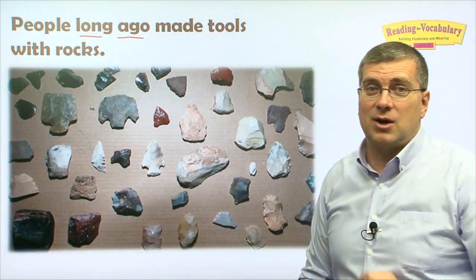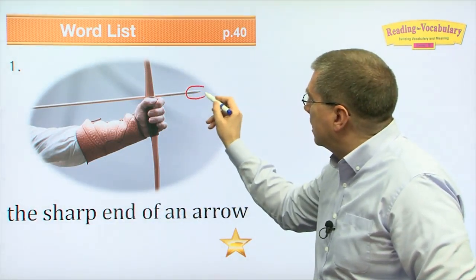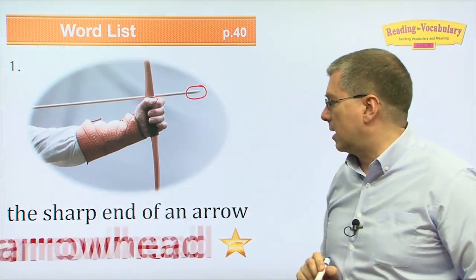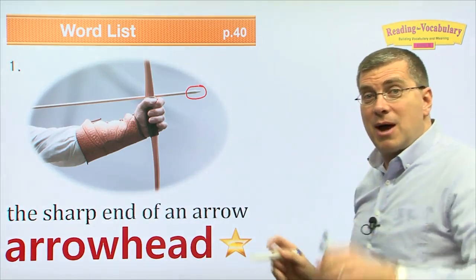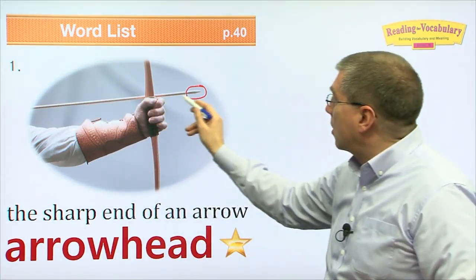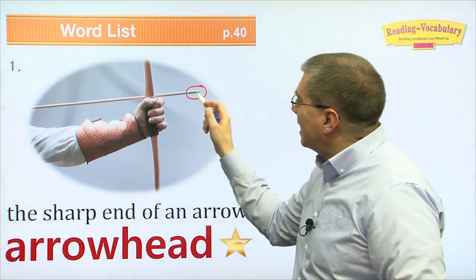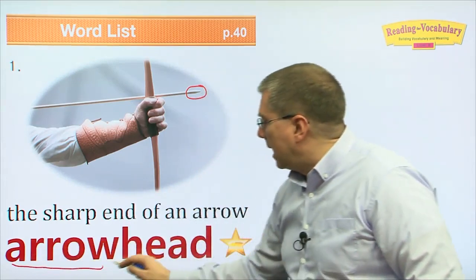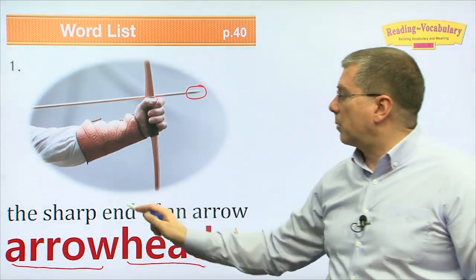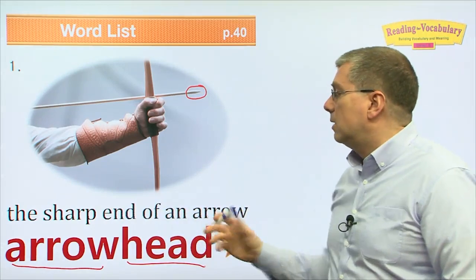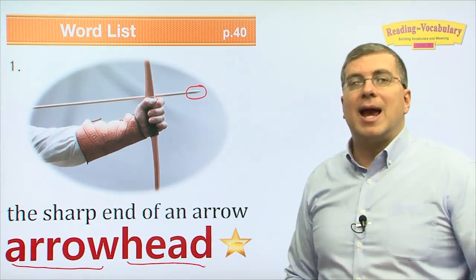Number one: the sharp end of an arrow. What do we call that part? That is the arrowhead. We know what a head is in our body, and think about an arrow — this is the arrow, this is the end. So this is the head: arrowhead. It's the very sharp end of an arrow. Put it together: arrowhead.